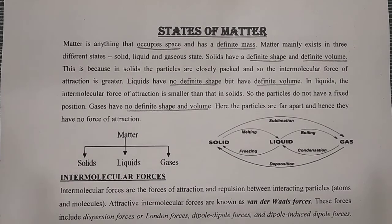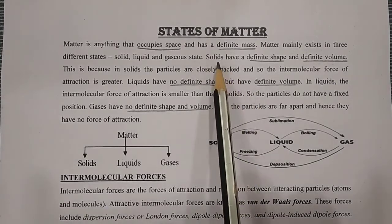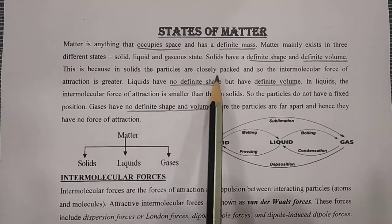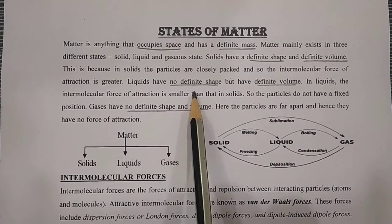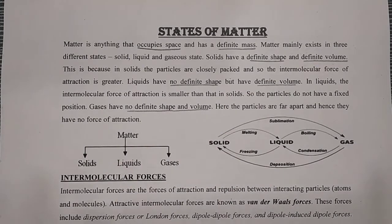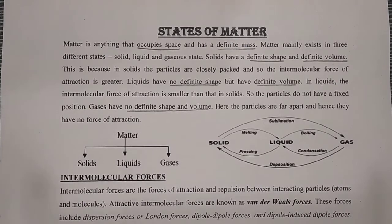Matter is anything that occupies space and has a definite mass. Matter mainly exists in three different states: solid, liquid, and gas. Solid has definite shape and definite volume because its particles are closely packed, so the intermolecular force of attraction is greater. Liquids have no definite shape but have definite volume; the intermolecular force is smaller than in solids, so particles do not have fixed positions. Gases have no definite shape and no definite volume — their particles are far apart with essentially no force of attraction.